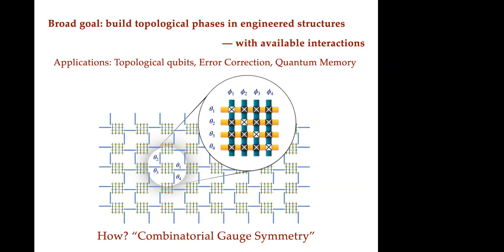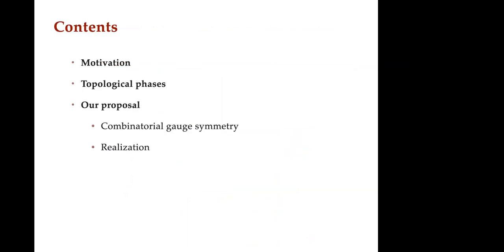The business world imposes a very strict discipline of practicality, which was actually helpful from the mathematical point of view — we were trying to come up with topological phases only with what's available, meaning only interactions that can be built in the lab today, not 12-body interactions or other exotic things. The talk has three pieces: motivation, topological phases, and our proposal involving combinatorial gauge symmetry and how to actually build it.